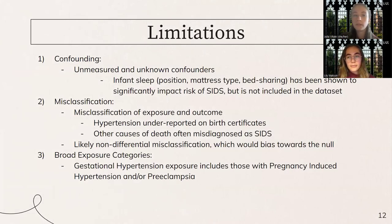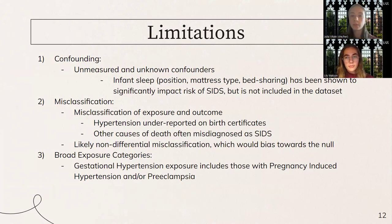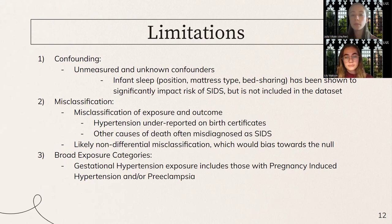The limitations of our study include confounding — both unknown and unmeasured. Infant sleep has been shown to be a significant risk factor for SIDS but is not included in this dataset. We also have potential misclassification of the exposure and outcome, as hypertension is underreported on birth certificates and other causes of death can potentially be misdiagnosed as SIDS. However, we believe this misclassification is likely non-differential between cases and controls, which would bias our estimates towards the null. We also had a broad exposure category for gestational hypertension, which included both pregnancy-induced hypertension and pre-eclampsia — two different disorders with very different physiologies — which may complicate the associations found.